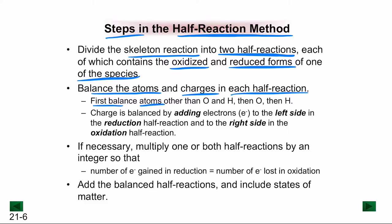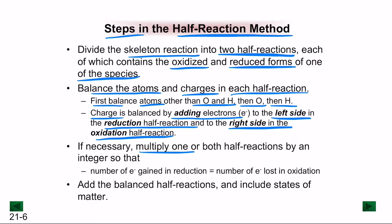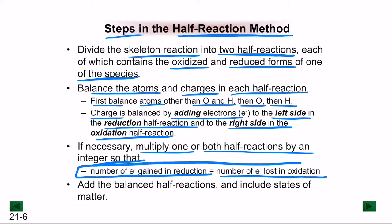Balance atoms other than oxygen and hydrogen first, then oxygen, then hydrogen. Charge is balanced by adding electrons to the left side of the reduction half-reaction and to the right side of the oxidation half-reaction. If necessary, multiply one or both half-reactions by an integer so that electrons gained equals electrons lost. Then add the balanced half-reactions together, including states of matter.